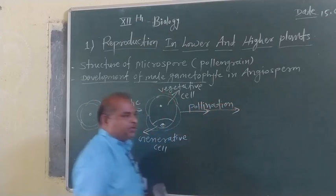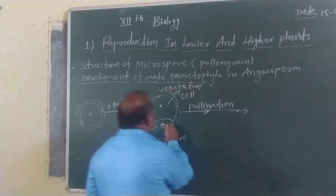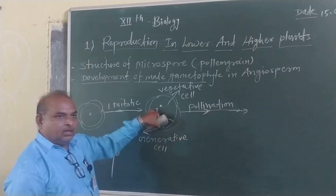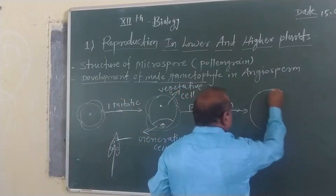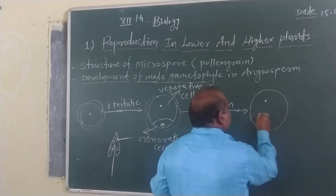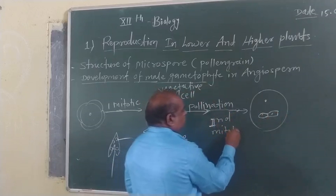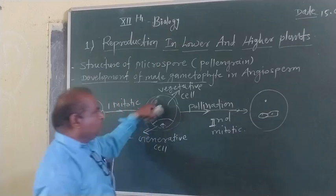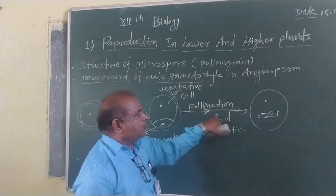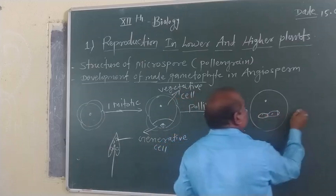The second mitotic division takes place after pollination on the stigma. The second mitotic division takes place only in the generative cell, not in the vegetative cell. The vegetative cell has the vegetative nucleus, and the generative cell has the generative nucleus. The generative cell undergoes the second mitotic division after pollination. The first mitotic division results in the formation of a two-cell structure before pollination, and the second mitotic division takes place after pollination, where the generative cell divides mitotically to form two haploid generative nuclei.